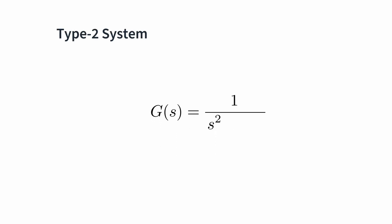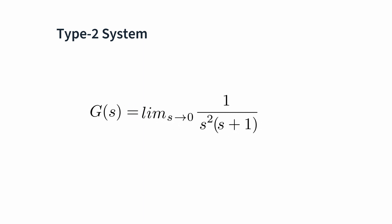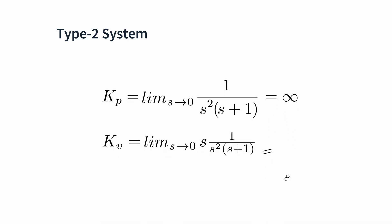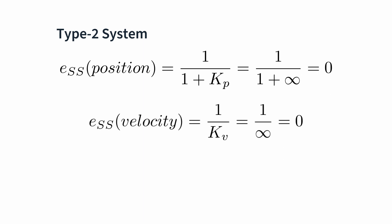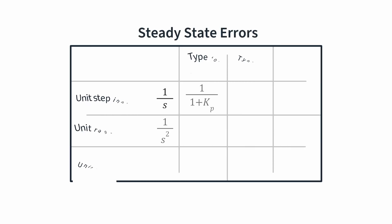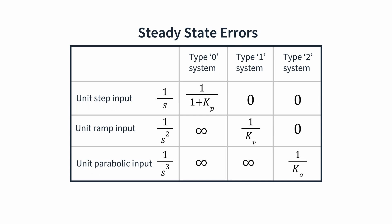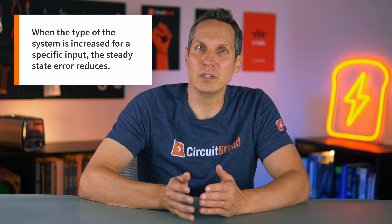Let's discuss the type two system and then we'll wrap this all up. For our example type two system, we'll assume the system is 1 over s squared times (s + 1). Running through the different coefficients, we get Kp as infinity, Kv as infinity, and Ka as 1. We take these coefficients and put them into our error calculations, and we get a position error of 0, a velocity error of 0, and an acceleration error of 1. So for a type two system, position and velocity errors are 0, while acceleration error is a constant at steady state. If we put this in table form, the pattern is more easily recognizable — we can see that when the type of the system is increased for a specific input, the steady state error reduces. This is an incredibly important observation.